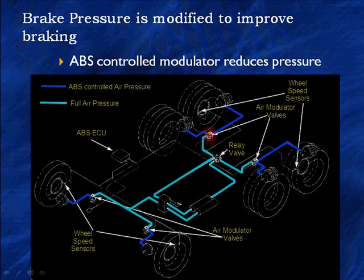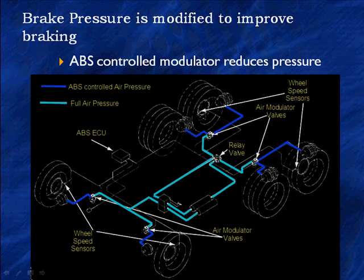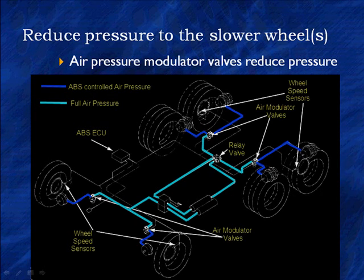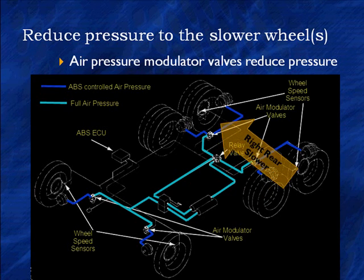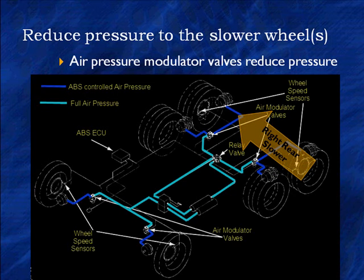This is a block diagram. We're looking at that red blinking indication on the right rear wheel of this tractor — it's going to reduce the pressure in order to correct that. We're going to reduce the pressure on these two wheels because that is the area that's controlled. There's one modulator for two wheels.